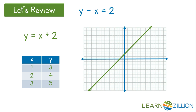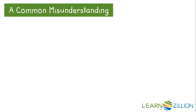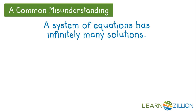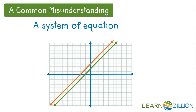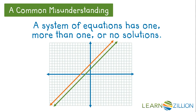A common misunderstanding is that a system of equations in two variables has infinitely many solutions. As you can see with this graph, each line — which represents an equation — displays an infinite amount of solutions. The system of equations, however, does not have an infinite amount of solutions unless the lines lie on top of one another. Therefore, a system of equations has one, more than one, or no solutions.